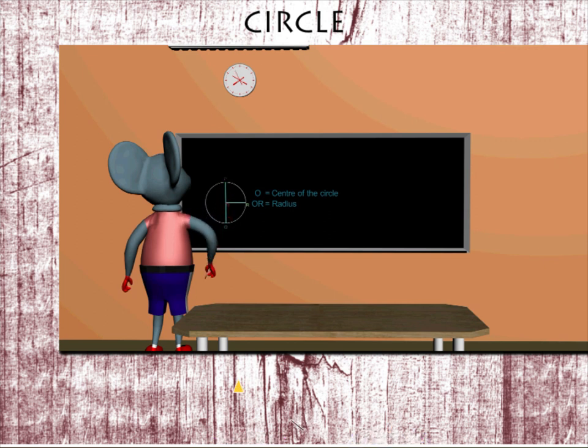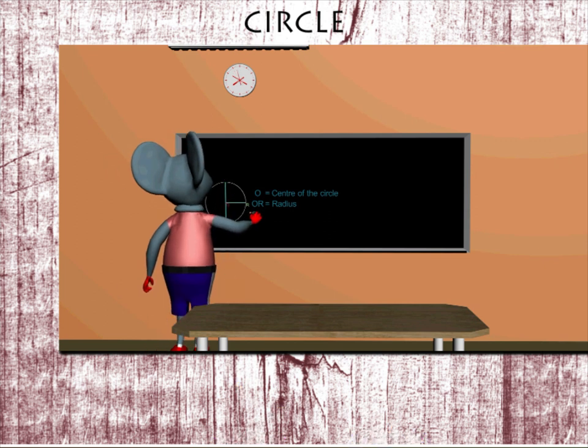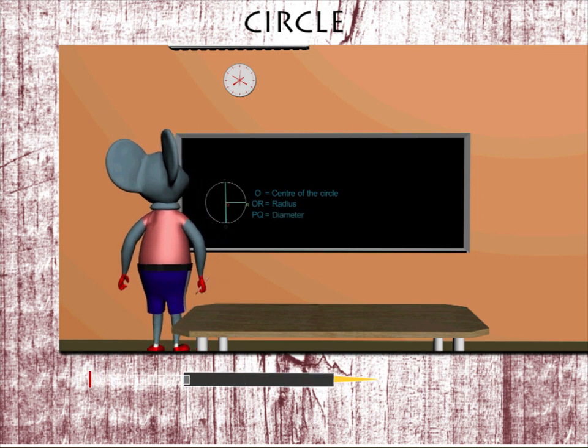Robbie draws a line PQ across the circle passing through the center and labels it diameter.